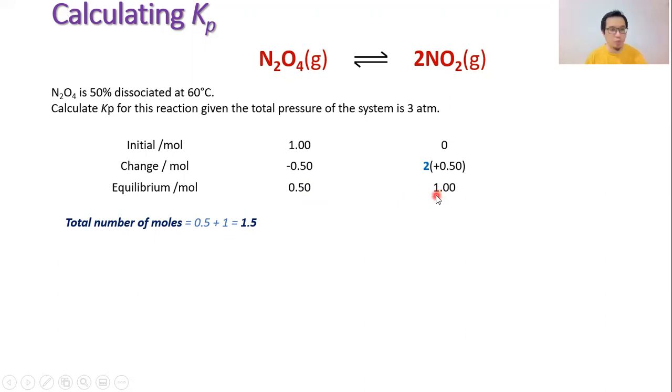To calculate the partial pressure of N2O4, you need to use the number of moles of N2O4, which is 0.5 as stated from the ICE table, divide with the total number of moles which we calculated, multiplied with the total pressure. So this section, 0.5 divided by 1.5, is literally your mole fraction.